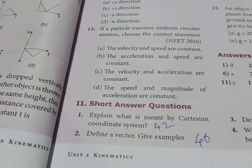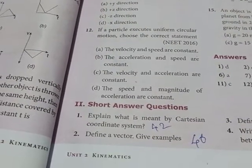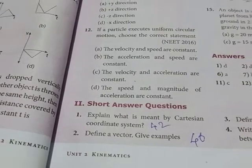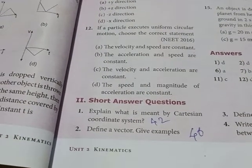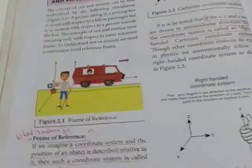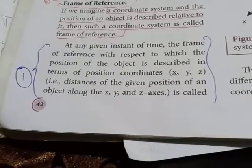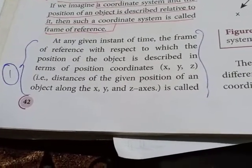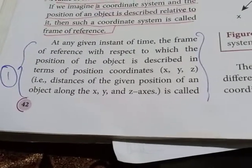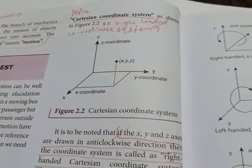Now let us discuss the book-back questions. Question number 1: explain what is meant by the Cartesian coordinate system. You can see the answer on page number 42. At any given instant of time, the frame of reference with respect to which the position of the object is described in terms of position coordinates x, y, z is called the Cartesian coordinate system.